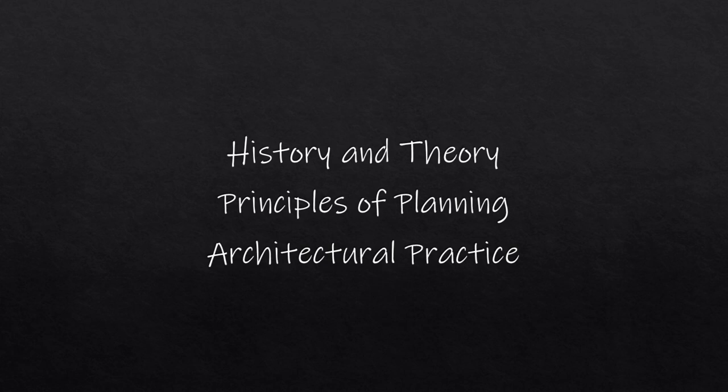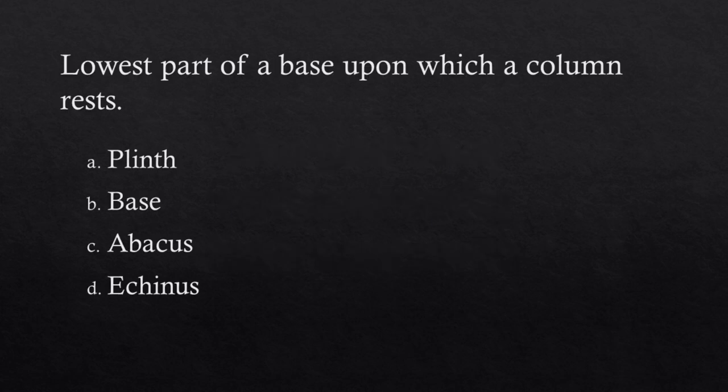Architecture Licensure Exam — Sample Board Exam Questions. Category: History and Theory, Principles of Planning, Architectural Practice. First question: What is the lowest part of a base upon which a column rests? Choices: Plinth, Base, Abacus, Echinus.